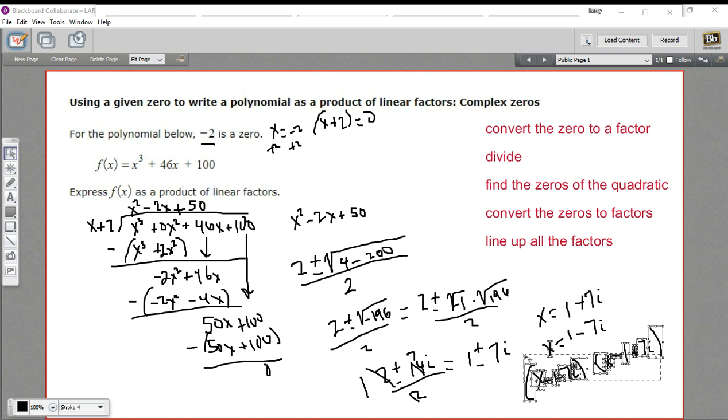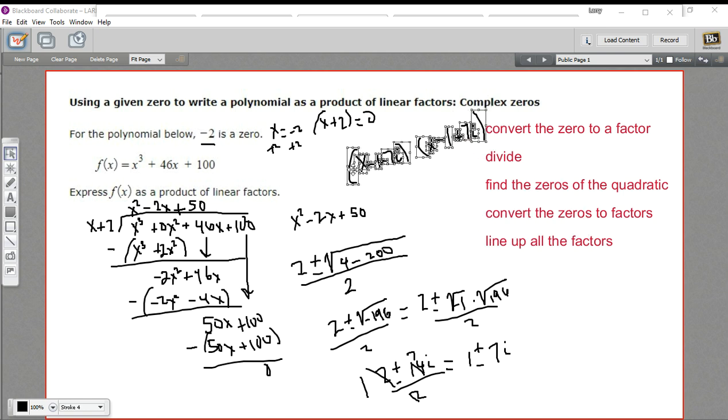All right. So those are our two complex factors. Let's see if I can grab all of this. Now I think I can grab all of this. So those two are factors plus this guy right here was our original factor. You put all of those together, just line them up. You've got your answer. So these are all of the factors of this function x cubed plus 46x plus 100.